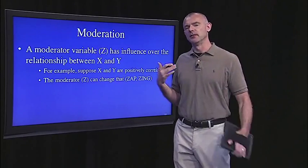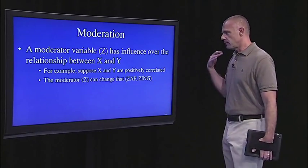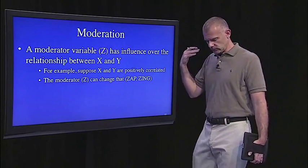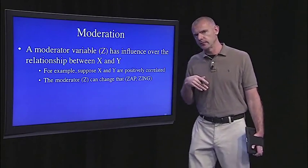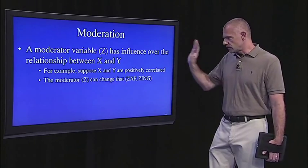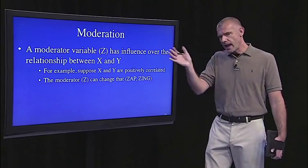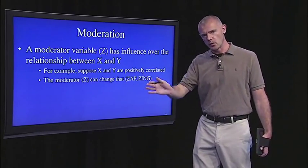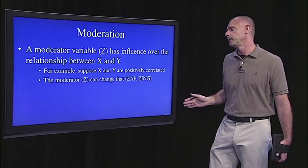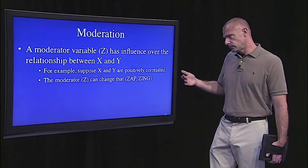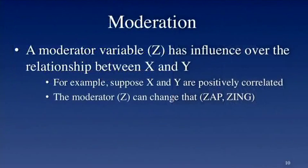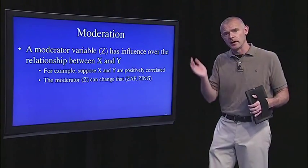Again, this is just an example for illustration. I don't want to be too negative. But again, the concept here of moderation is a moderator variable, and I'm just using the letter Z instead of X to distinguish it, it has sway, it has influence over the relationship between X and Y. So again, suppose X and Y are positively correlated, we introduce the moderator and zap, it could just eliminate that correlation. Or zing, it could make it stronger.